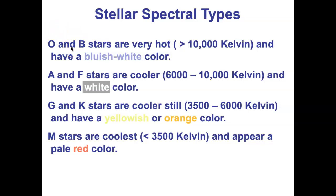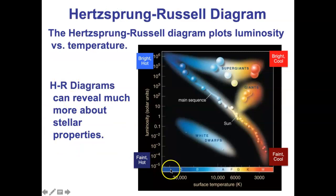Going from hottest to coolest: B type stars are still bluish-white; A and F types are a little cooler but still white hot; G type stars are around 6,000 Kelvin — stars like the sun, so they're yellowish; K type stars are orange in color; and the coolest, reddest stars are the M type stars. These letters across the bottom of the diagram are a code — a way of encoding information about temperature, color, and peak wavelength.